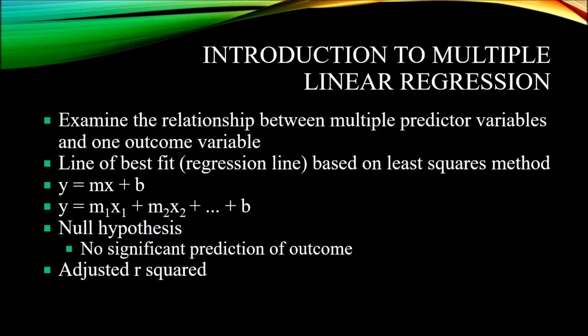With these three variables, you want to see how well you can predict that adaptability level, that skill level. It may be that those variables don't predict adaptability at all, or one or two of those variables may predict adaptability while the other variable or variables may not, or all three variables may predict that outcome variable. With these type of data, it would not be unusual to perform a multiple linear regression.